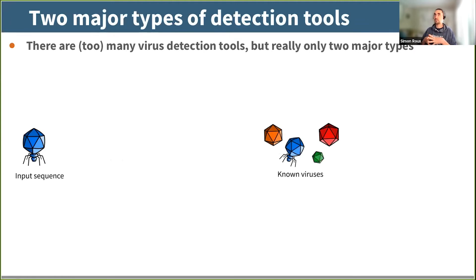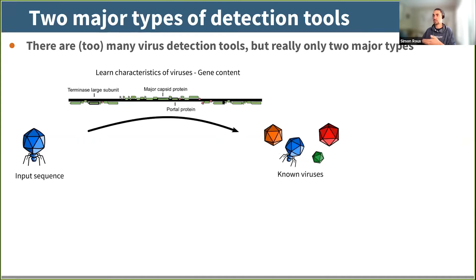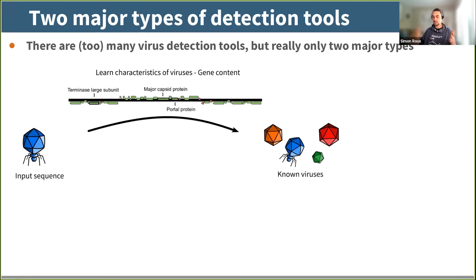To reframe: every tool works in a bit the same way. We have known viruses, we have an input sequence, and we are trying to guess if this input sequence is a virus or not. You have two ways to do this — you can learn what a virus looks like from its gene content. You start from your input sequence, predict your genes or CDS, do a gene-by-gene annotation, and try to guess whether or not your input is a virus. That's pretty much what was just described with VIBRANT and SynodetTaker.